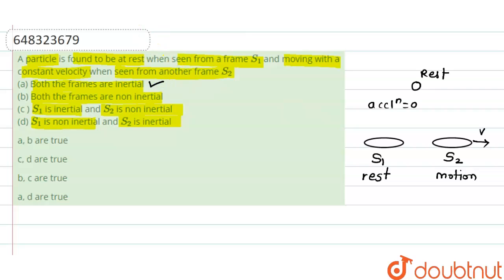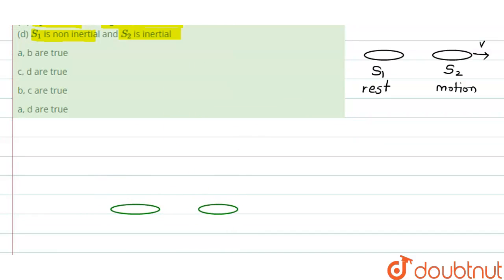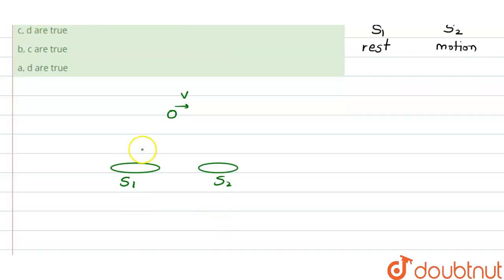Now for the second case, suppose there are two frames again, S1 and S2. The particle is in motion — it is moving with some velocity v. From S1, the observation is that the particle is at rest. To satisfy this condition, S1 must also be moving with the same velocity v — only then will the particle appear to be at rest when observed from S1.